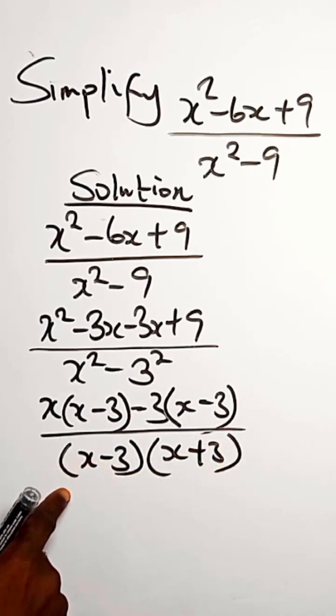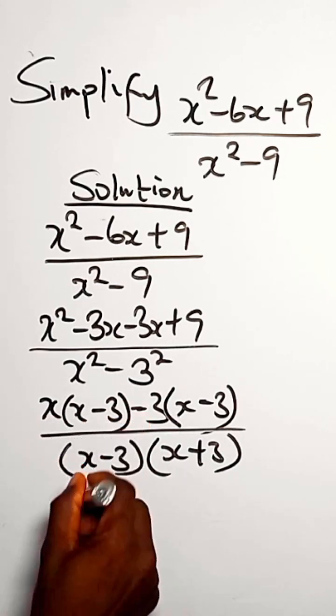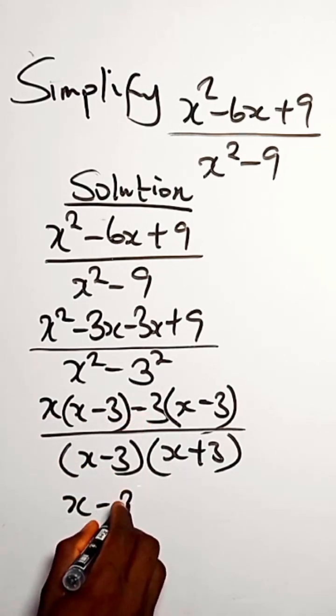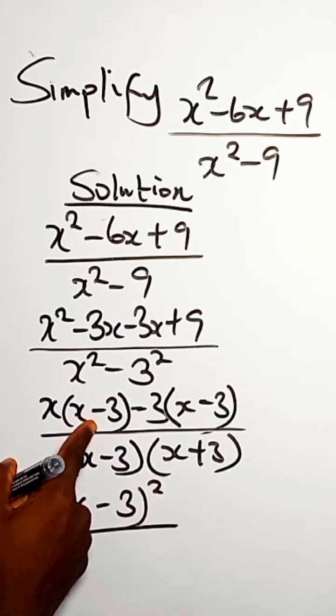So for this, the numerator becomes (x - 3)(x - 3), which is (x - 3)² for the numerator.